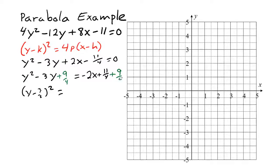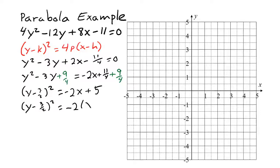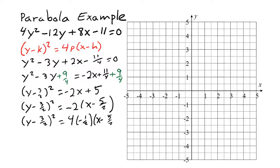The left side becomes y minus 3/2, the quantity squared. On the right, we have negative 2x plus 11/4 plus 9/4; since 11 plus 9 is 20, we have 20/4 which reduces to 5. We factor out the coefficient on x, which is negative 2, giving negative 2 times the quantity x minus 5/2. Writing negative 2 as 4 times negative 1/2 puts us in standard form. This gives a vertex at x equals 5/2, y equals 3/2, and p equals negative 1/2.